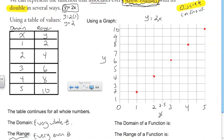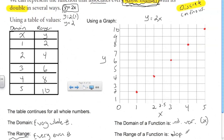The domain of a function is the independent variable — in this case, the x values. And the range of a function is the dependent variable — in this case, the y values.